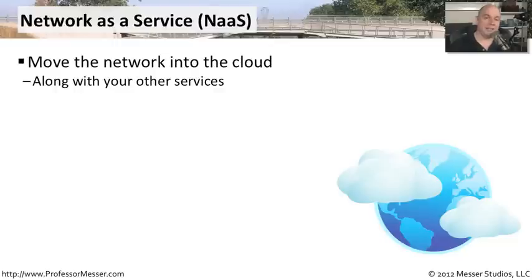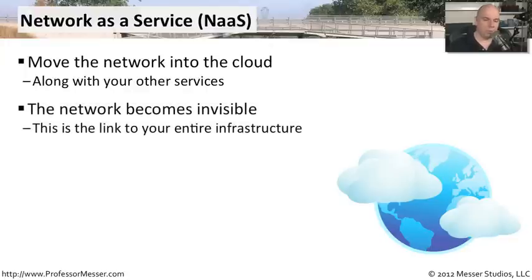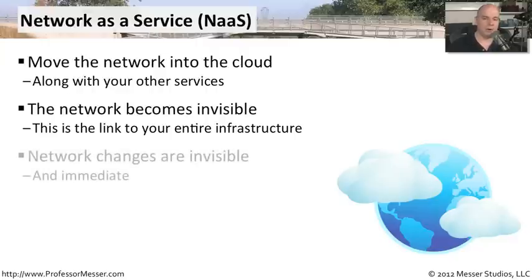We're usually not just sending our network into the cloud, but we're sending our network along with our applications and all of our servers so that everything is running in that separate facility. We simply have one link that takes us from our facility into the cloud, and now we don't have to worry at all with VLAN configurations or firewall configurations. Everything is done separately because we have the network running as a service at that third-party facility.